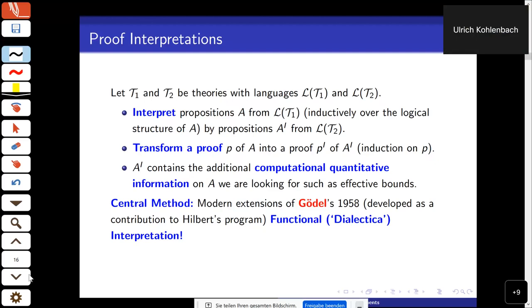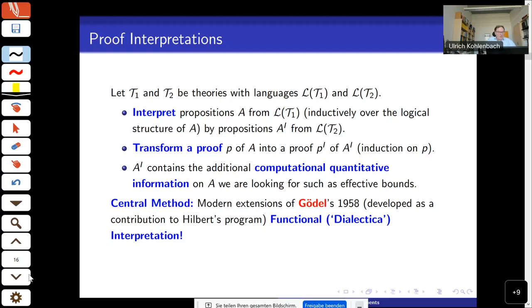A proof interpretation assigns to each formula A in the language of T1, by induction on A, a new formula A^i — its interpretation in T2 — and transforms any proof P in T1 of A into a proof P^i of A^i. The new interpreted proof is not essentially longer than the original because we keep the usual lemma structure intact. The interpretation has to be set up so that A^i, when it comes to the conclusion C, carries the additional information we're looking for. The main methods are extensions and refinements of Gödel's original Dialectica interpretation.